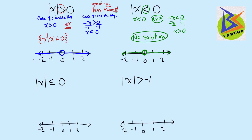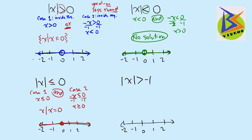There are no numbers that will make that true, and if you think about it, you can't have an absolute value of a number be less than zero — it has to be zero or greater. Now let's look at the absolute value of x is less than or equal to zero. Case one: x is less than or equal to zero — we include zero, so we fill that in with a closed circle. Case two: negative x is less than or equal to zero — dividing by negative one gives x is greater than or equal to zero, so a closed circle with an arrow pointing the other direction. This is still an AND statement, and it does include zero, so x can equal zero — there is that one instance where this is true.